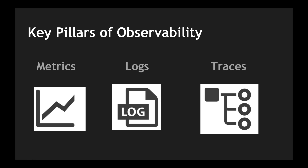However, there is one more pillar which was recently introduced. Netflix, being the pioneer in the cloud space, created the chaos engineering experiments, and chaos engineering can be included as part of the observability paradigm. What does chaos engineering mean? There is an exclusive video on it but I'll briefly cover it here. Imagine you have a steady state of your application; you want to create a hypothesis around what can go wrong, design an experiment saying "if this happens, this is what I expect my application to do," and then come up with learnings from that experiment and use those results to fix bugs or gaps in your systems.